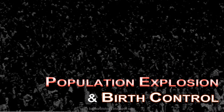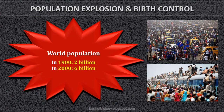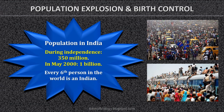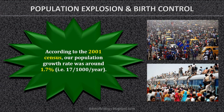Population Explosion and Birth Control. In 1900, the world population was around 2 billion, that is 2,000 million. By 2000, it rocketed to about 6 billion. In India, population was nearly 350 million at the time of independence. It crossed 1 billion in May 2000, meaning every sixth person in the world is an Indian. According to the 2001 census report, our population growth rate was still around 1.7%, that is 17 per thousand per year — a rate at which our population could double in 33 years.